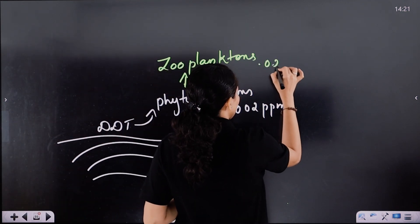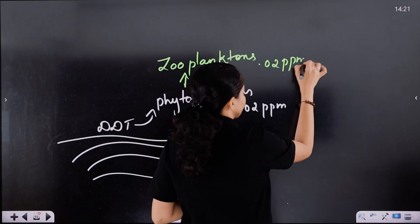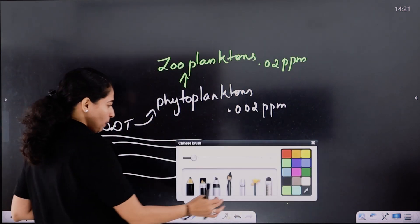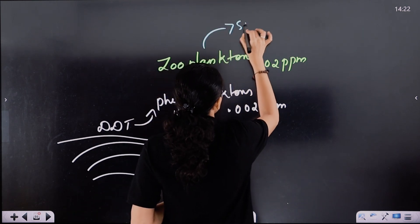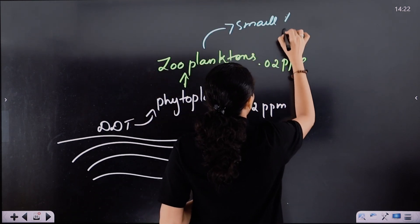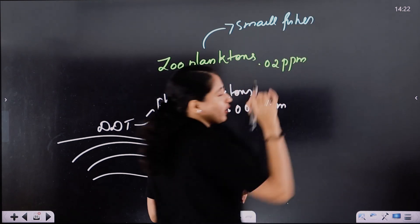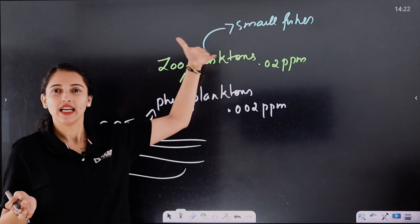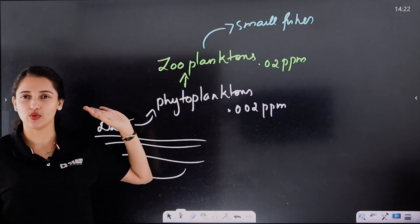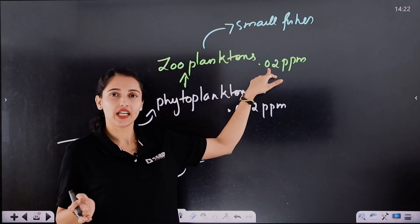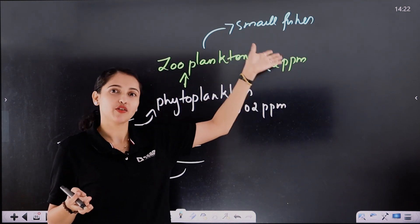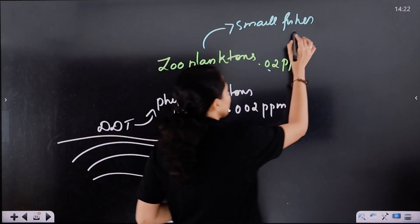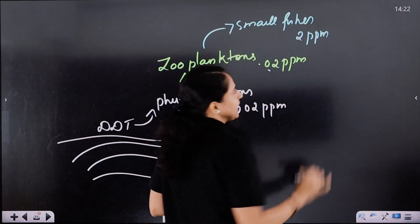So the concentration in zooplankton will be around 0.02 parts per million — about 50 times more. Now if we take all those zooplanktons and they are eaten by small fishes, the small fish accumulate a higher amount. The concentration in small fish becomes about 0.2 parts per million, and then 2 parts per million of DDT is found.